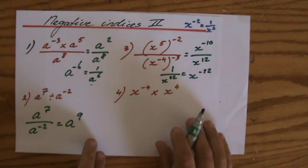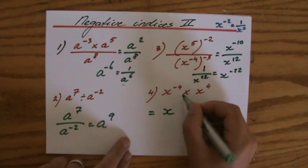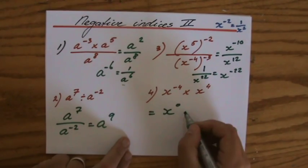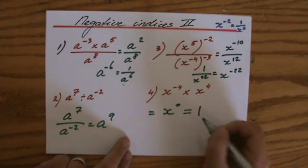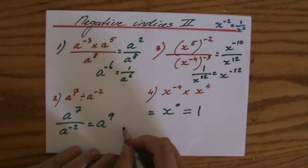x to the power minus 4 times x to the power 4: first law of indices. I add the bases - the bases are the same, multiplying you add the indices. Minus 4 plus 4 is 0, and everything to the power 0 equals 1.